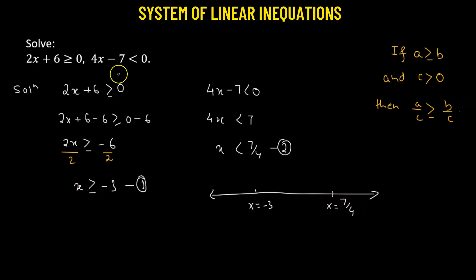So x greater than or equals to negative 3 means we'll have to consider all the values of x which is greater than negative 3. That means the solution of x is going to lie to the right of x equals to negative 3, and it's going to be included. So that's why I put a dot here, and it is going to extend all the way up to positive infinity.